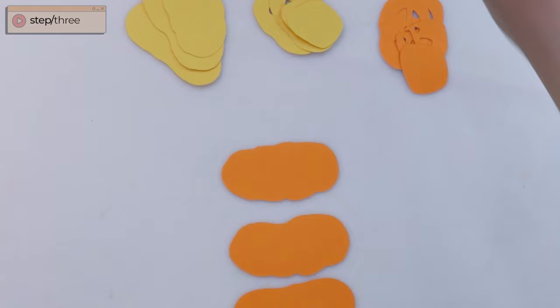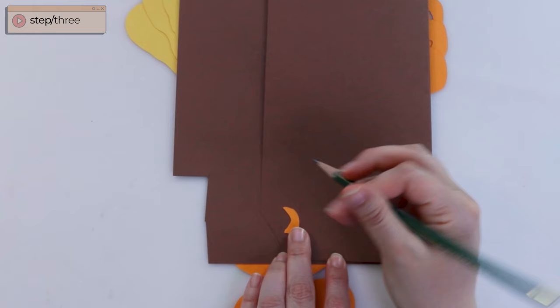So the next thing that we're going to be doing is creating our stem, and if you are intimidated by drawing or even cutting out freehand, I have provided a pumpkin stem for you on the die cut to trace and then cut out for yourself.